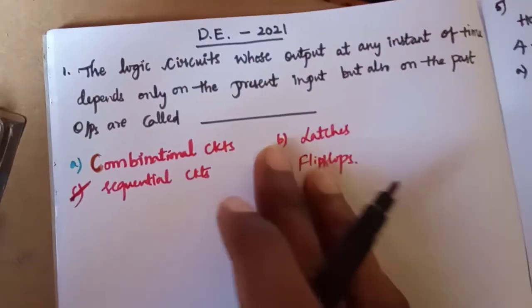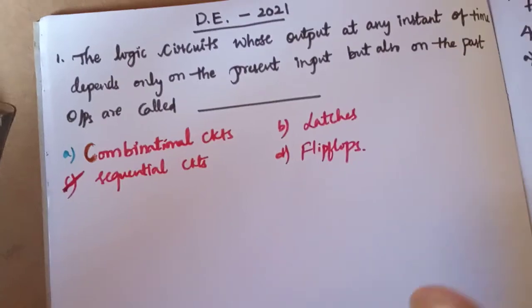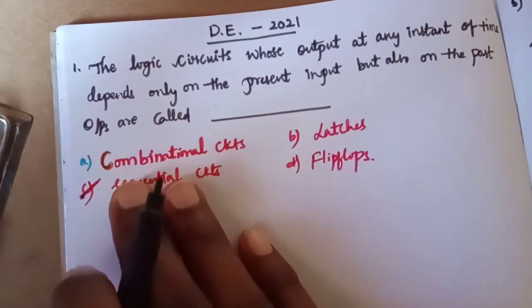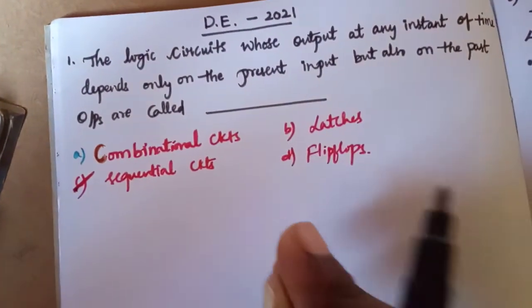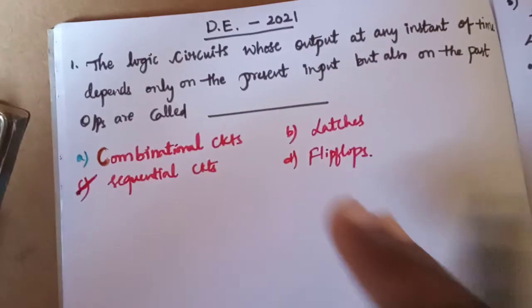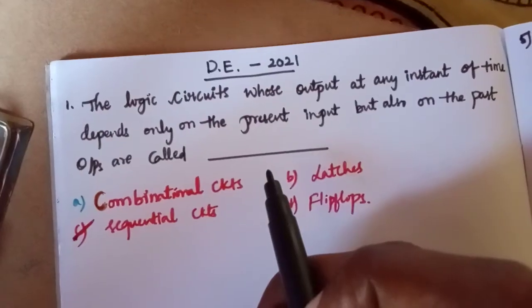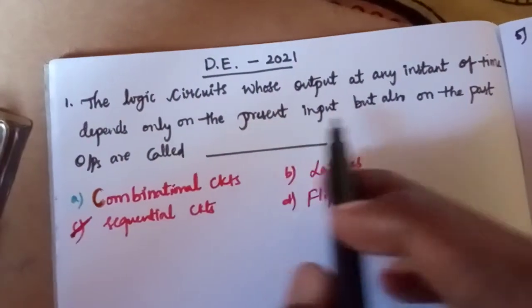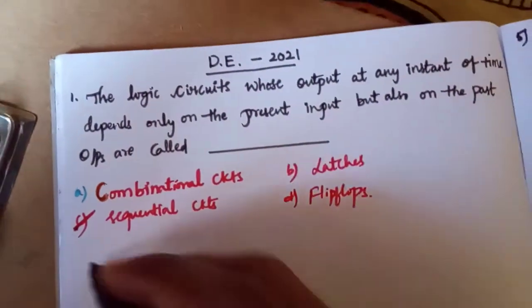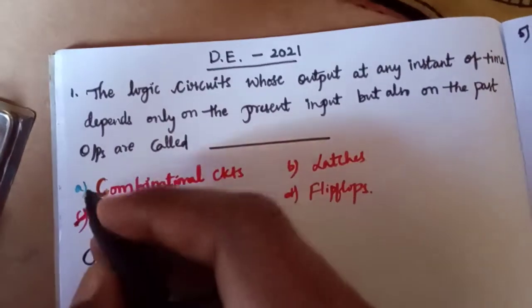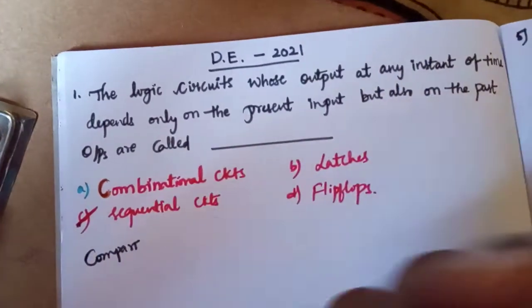First of all, we are going to talk about digital electronics. The logic circuit's output at any instant of time depends not only on the present inputs but also on the past inputs. Combinational circuits and sequential circuits are very important topics we are explaining.